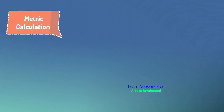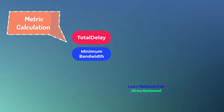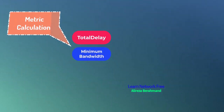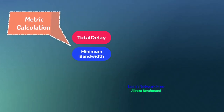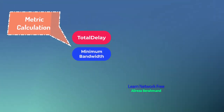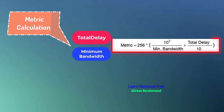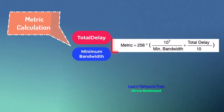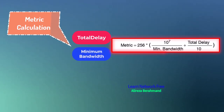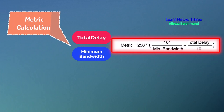Number two is metric calculation. EIGRP uses a composite metric mostly based on minimum bandwidth and total delay. You can calculate the metric with this formula: 256 times (10 to the power of 7 divided by minimum bandwidth) plus (total delay divided by 10).